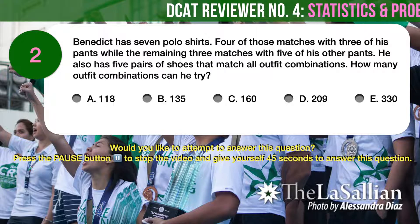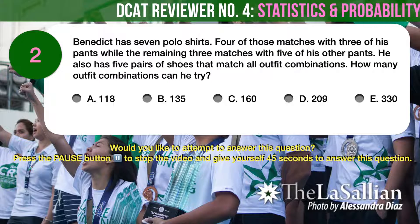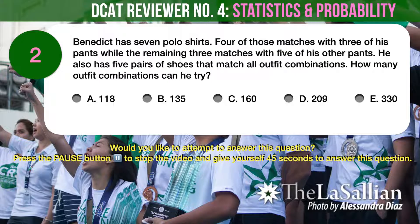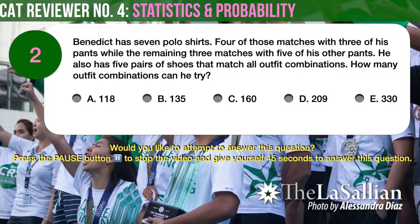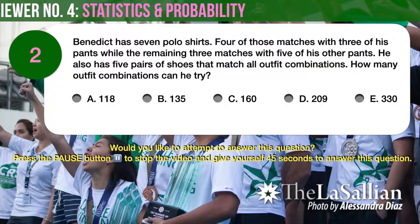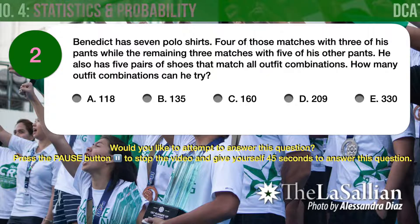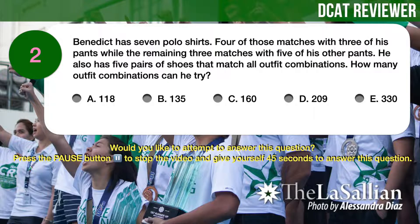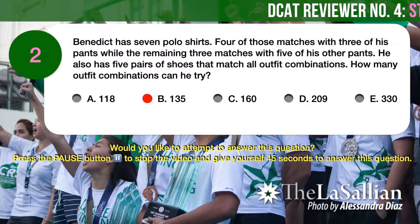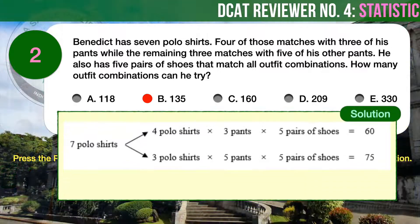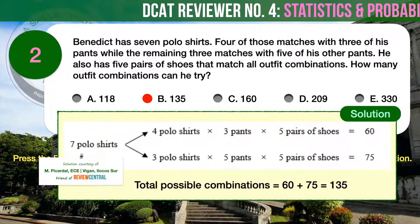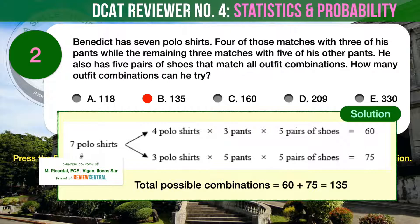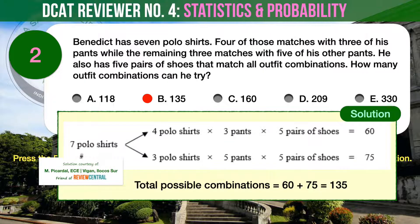A, 118. B, 135. C, 160. D, 209. E, 330. The correct answer is B, 135. We can show all the following combinations as follows. Therefore, the total combination is 60 plus 75, or 135.